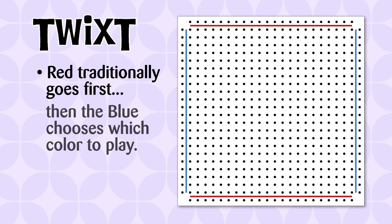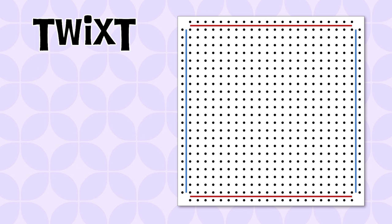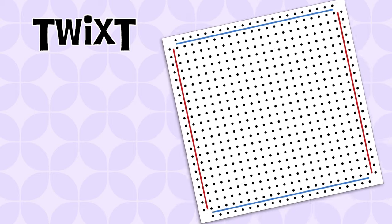Red traditionally goes first. Then the opponent has the choice to swap sides and still take the second turn in the game. If they choose not to swap colors, they still get the second turn. This is a gimmick to balance the first player advantage, which is a statistically proven thing — most players won't notice it, but it's there. It was not published in the 3M version, but was later added to the official rules by Mr. Randolph. If this option is chosen, you can rotate the board to better visualize your objective.